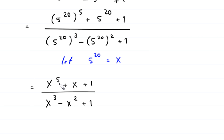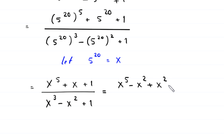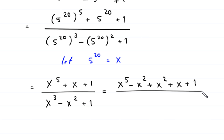Now in this numerator, we add and subtract x squared. So this will become x to the power 5 minus x squared, plus x squared plus x plus 1, divided by x cubed minus x squared plus 1.